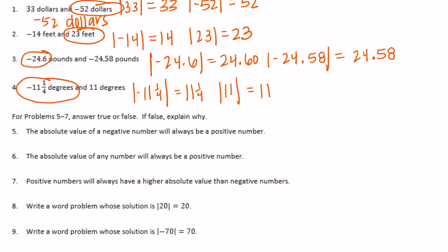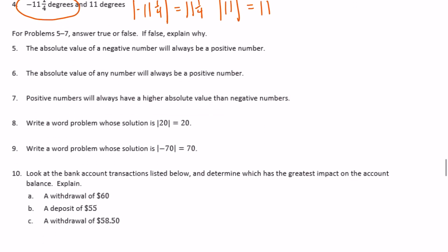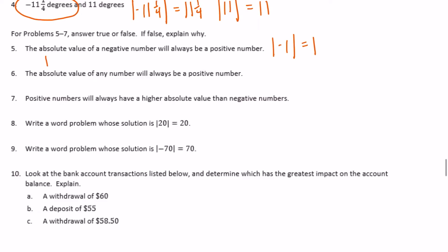Next we have for problems 5 through 7, answer true or false. If false, explain why. Number 5: The absolute value of a negative number will always be a positive number. So for example, the absolute value of negative 1 is always 1, because we're always counting the distance from 0. So this is true. If you want another example, the absolute value of negative 72 would be 72.